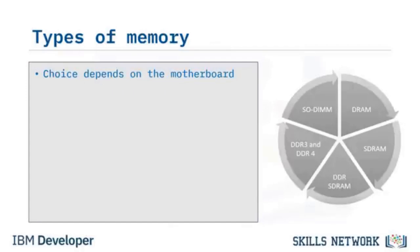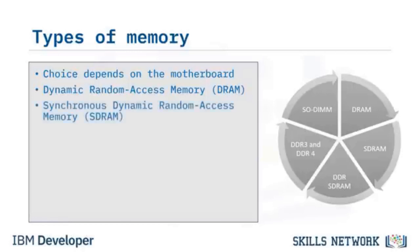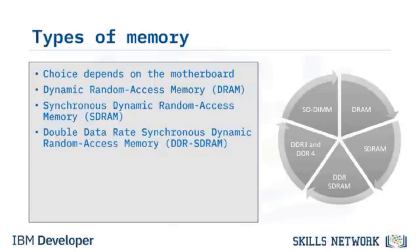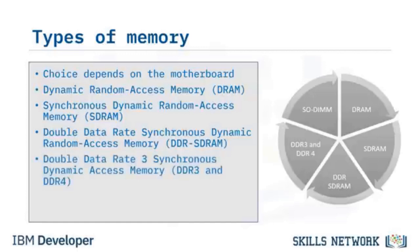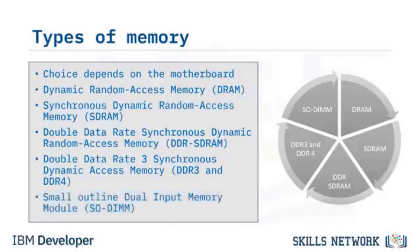Common forms of memory include: DRAM (Dynamic Random Access Memory), which stores each bit in a memory cell consisting of a capacitor and transistor; SDRAM (Synchronous Dynamic Random Access Memory), which can run faster than DRAM; DDR-SDRAM, which fetches data twice per clock cycle; DDR3-SDRAM, faster than DDR-SDRAM; DDR4, a faster and more reliable replacement for DDR3-SDRAM that uses less power; and SODIMM chips, commonly used in notebooks since they take half the space of desktop slots.